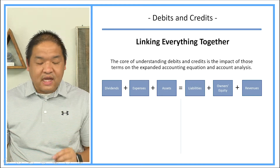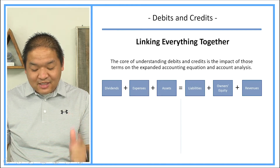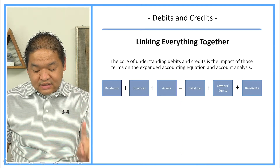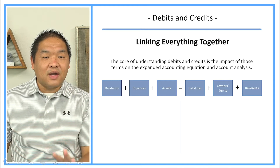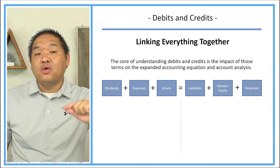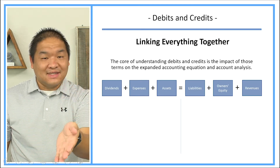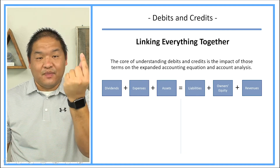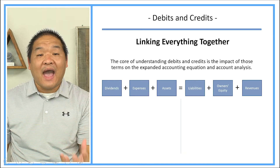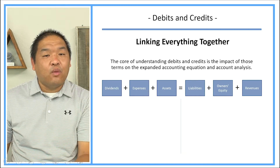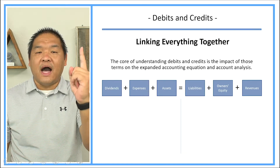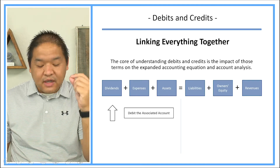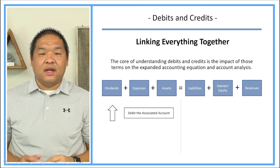On the left side, we've got dividends, expenses, and assets. The rule here is that if an account is a dividend, expense, or an asset, and it goes up — for instance, cash, more cash in your pocket — that goes up. Cash is an asset. If one of these three components goes up, then we are going to debit the associated account.